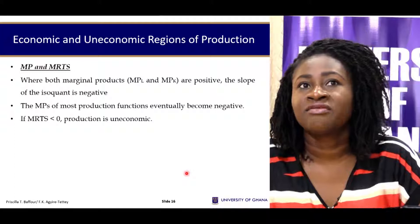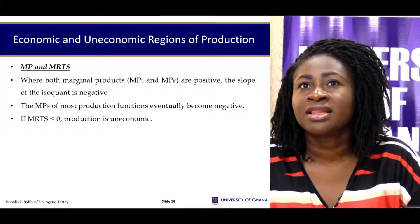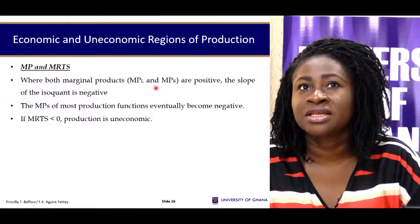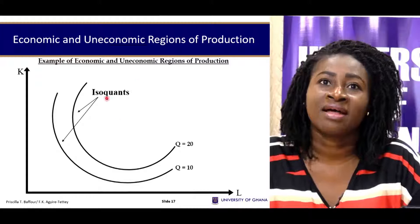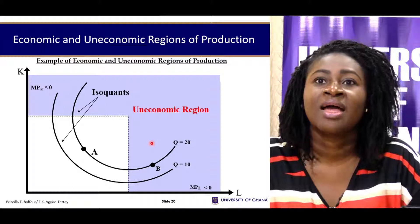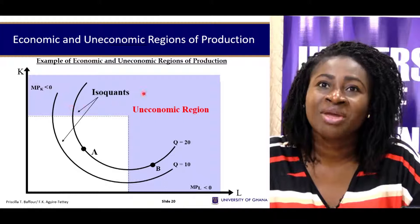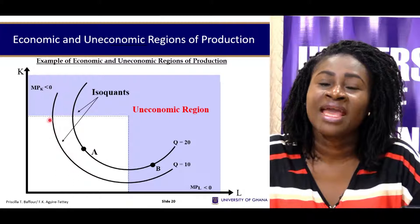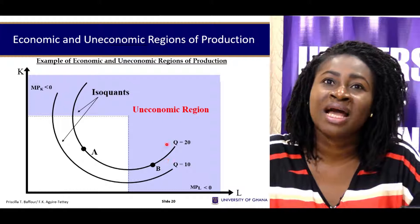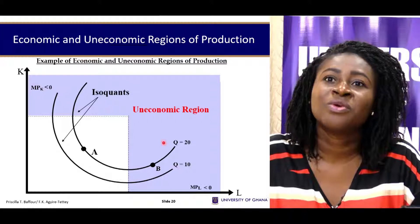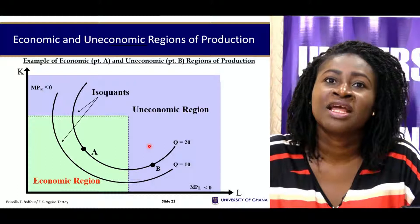The marginal rate of technical substitution (MRTS) is the slope of the isoquant, given by the ratio of the marginal product of labor to the marginal product of capital. On a typical isoquant, we identify which regions are efficient to operate in. The economic regions are the non-shaded areas where it is cost-effective for a firm to operate, as operating outside these regions — picking more of one factor and straining the technology — becomes less cost-effective.